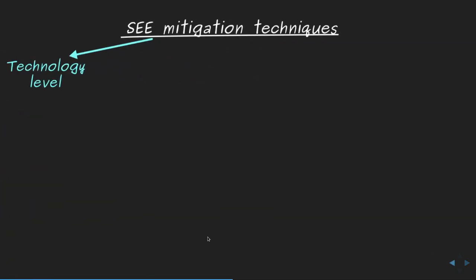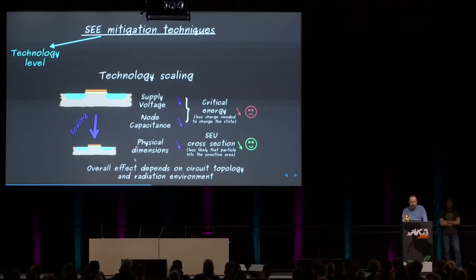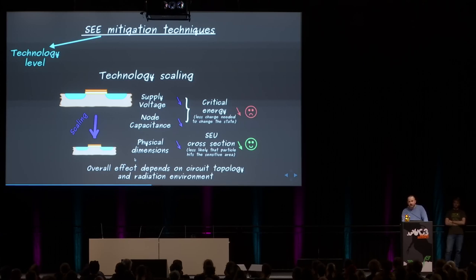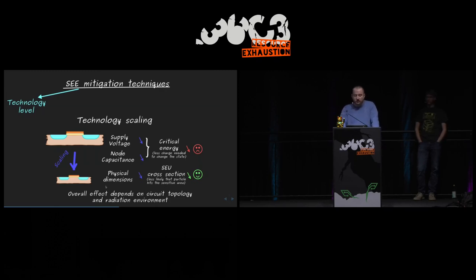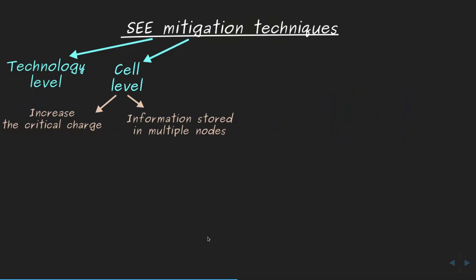Technology plays a significant role in single event upset susceptibility. In modern technologies, smaller device sizes come with smaller supply voltages and smaller node capacitances, meaning less critical charge is required to flip a bit — which is bad for SEU hardness. At the same time, physically smaller transistors present a smaller cross section for being hit, so the overall impact depends on circuit topology and the radiation environment.